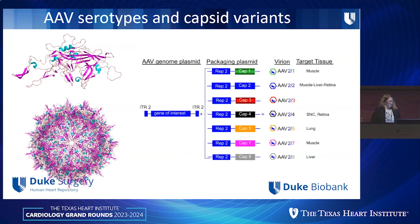AAV has a safer clinical profile than adenovirus and the nice property of conferring long-term gene expression. One constraint is limited packaging size, but with ex vivo perfusion you can circumvent this by providing cocktails of viral vectors. I spend a lot of time looking at different AAV serotypes and understanding the capsid, which confers tissue transduction or tissue tropism. There are 13-14 naturally occurring serotypes and thousands — if not millions — of different capsid variants.